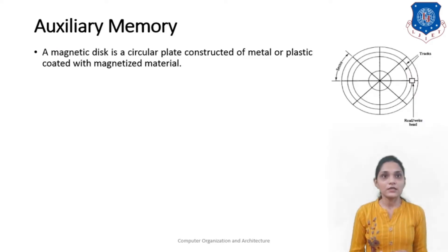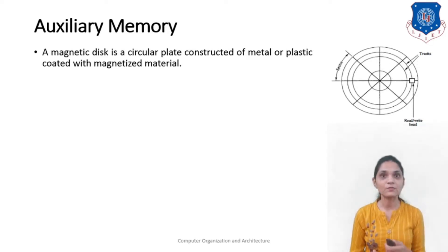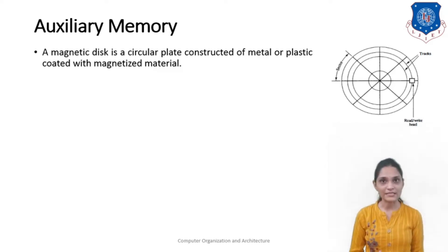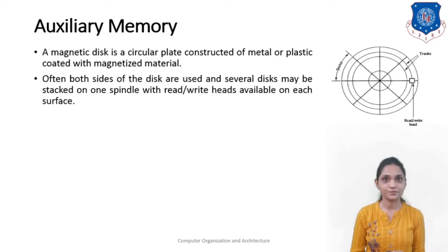The stored bits are detected by the change in the magnetic field produced by the recorded spots on the surface as it passes through the read head. The magnetic disc is a circular plate constructed of metal or plastic, coated with magnetized material in the form of circles.